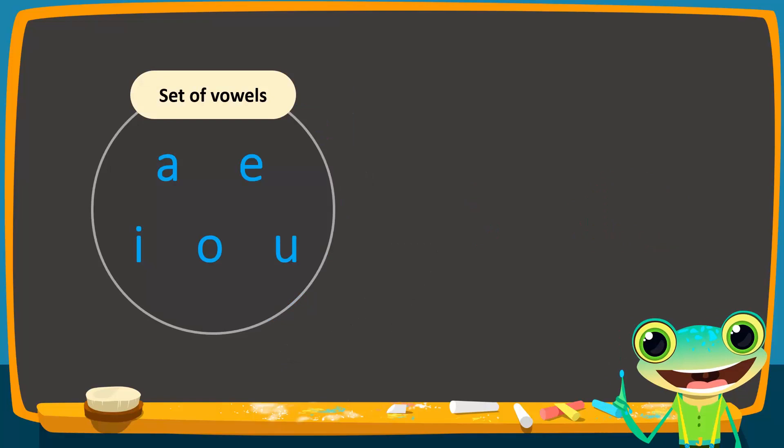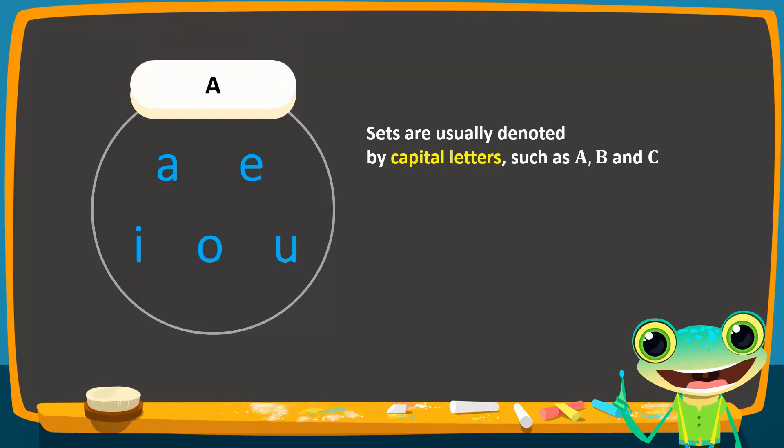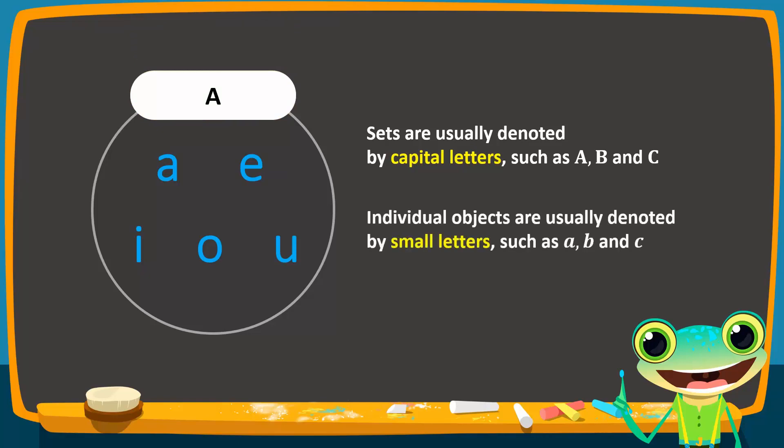Next, we will look at the notation of sets using the set of English vowels as an example. When we talk about sets, we normally talk about two things. First, we need to refer to the whole set, and second, we need to refer to individual objects in the set. To denote the set, we normally use capital letters such as A, B, C, and so on. We shall denote this set as A. To denote the individual objects, we usually use small letters such as small a, b, c, and so on.